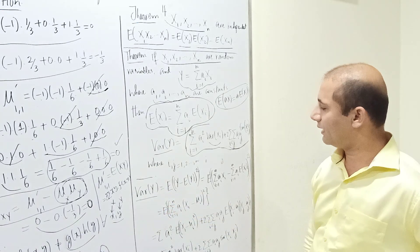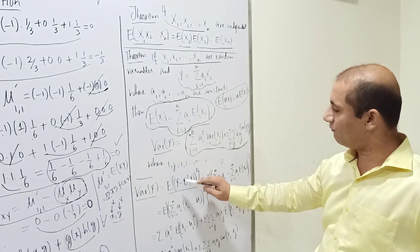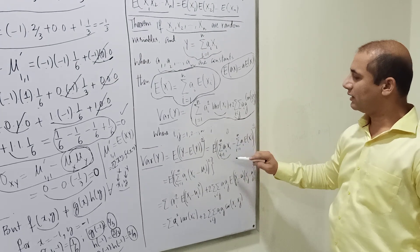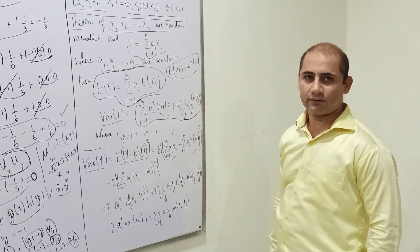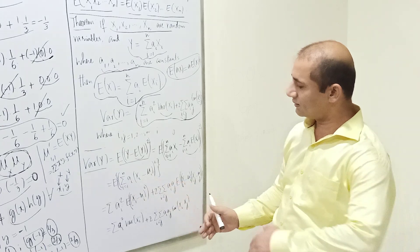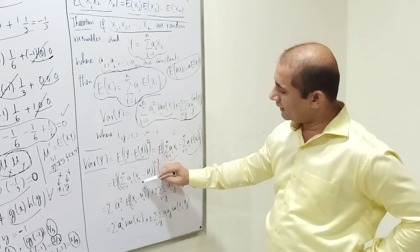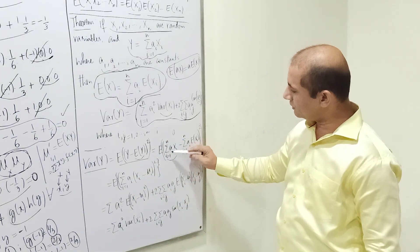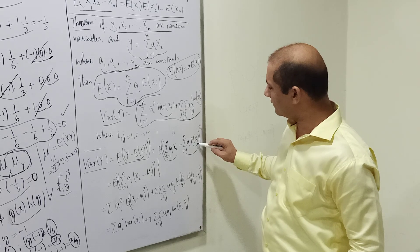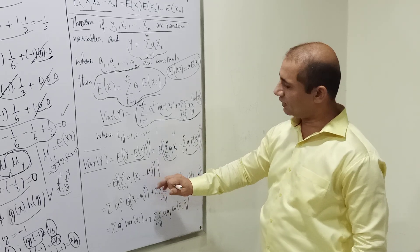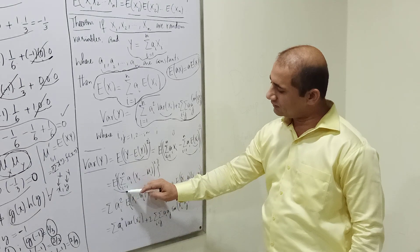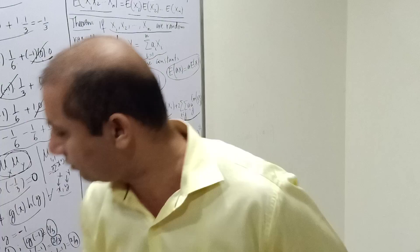To derive Var(Y), we use Var(Y) = E[(Y - E[Y])²]. Substituting the linear combination and its expectation, we factor out the coefficients a_i and are left with (X_i - mu_i) terms. Squaring the linear combination produces squared and cross-product terms, analogous to expanding (x1 + x2 + x3)².